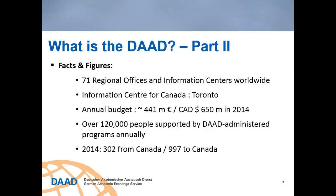Moving on to some facts and figures — how do we do this logistically? DAAD has a worldwide network of 71 offices currently all around the globe. We have an information center for Canada in Toronto, an information center in San Francisco, and a regional office in New York. In 2014, DAAD worldwide had a budget of approximately 440 million euros. DAAD-administered programs helped move about 120,000 individuals either from Germany out into the world or from the world into Germany, and approximately 1,200 of those were related to Canada.